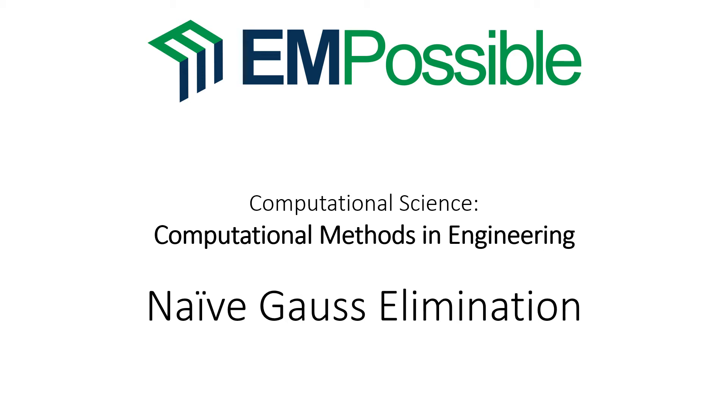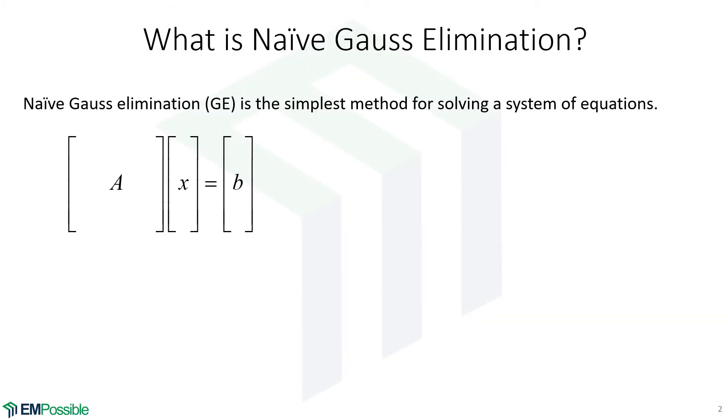Naive Gauss elimination. So let's say we have an AX equals B, and we want to solve this. This is where naive Gauss elimination comes in. And this is probably the simplest and most straightforward method for solving this system of equations.